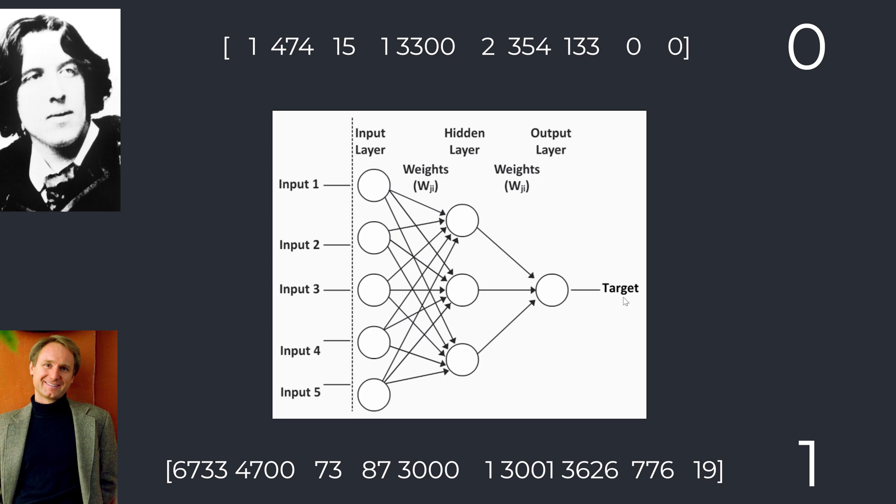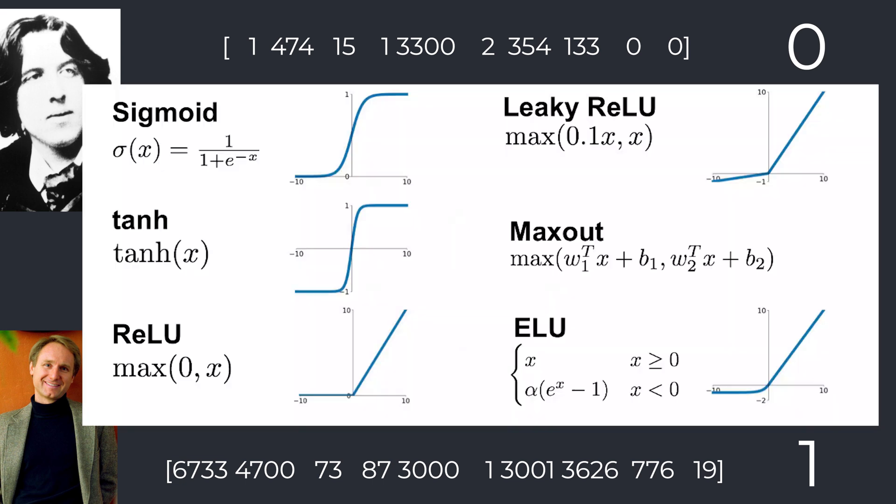So the input layer has a known value—that's the numerical array. The output value is a known value for the output layer, and that is a single number, zero or one.